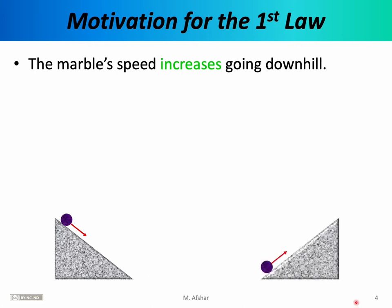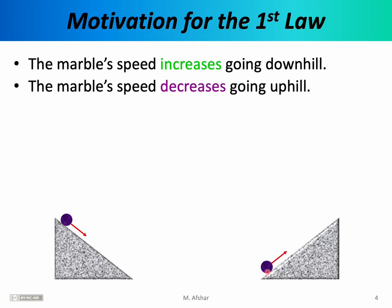You might also do the opposite experiment: with the same inclined surface, put the marble at the bottom and flick it upwards, imparting an initial velocity, and observe it roll uphill. In this case, the speed decreases — gravity is still acting on the marble but now in the opposite direction, slowing it down. In either case, friction is present but its work is negligible on a relatively smooth rolling surface. So really the only force in operation is the force of gravity.